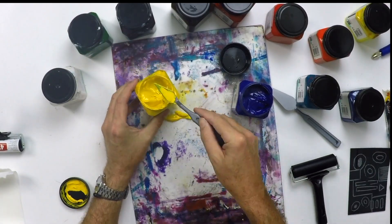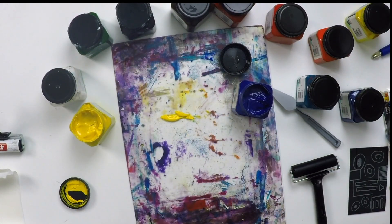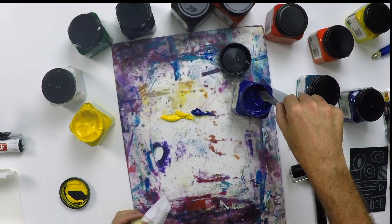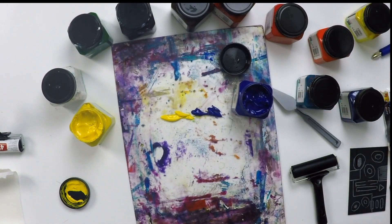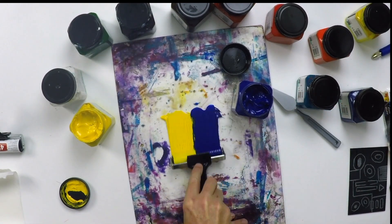On our plate here I've got some yellow and some blue ink, and we're going to roll these up side by side. They're just going to merge in the middle gently, so we just roll those together.